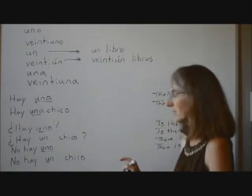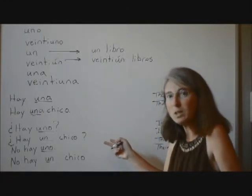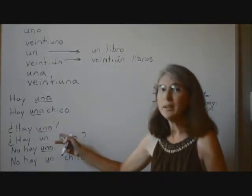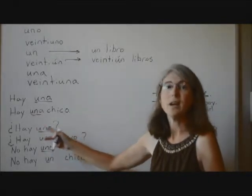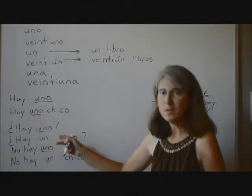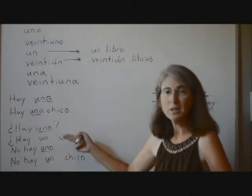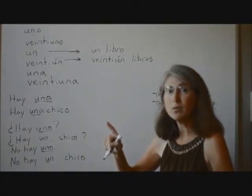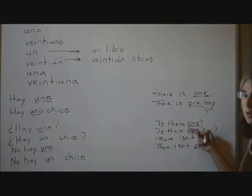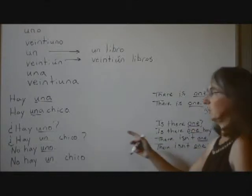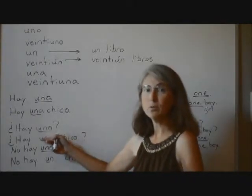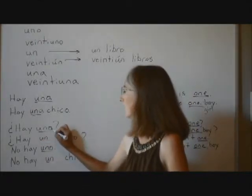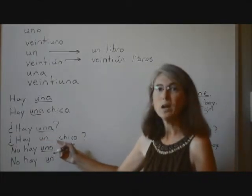Now, if we're talking about a girl, if we know we're talking about something feminine, then 'uno' is going to become 'una.' Hay una. How many girls are there? There's one. Hay una. Hay una chica. So 'una' always means one. Hay una chica. There's one girl.